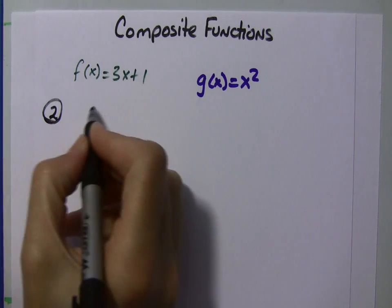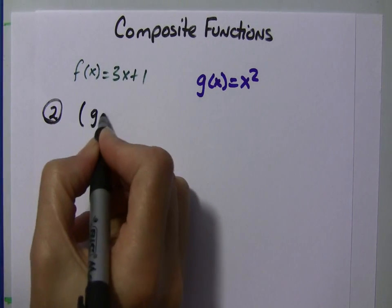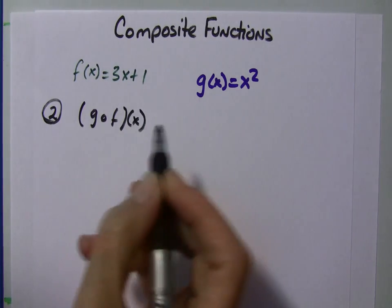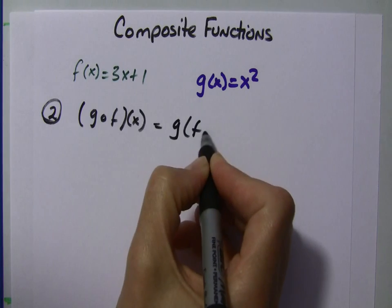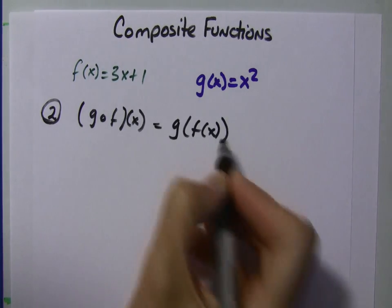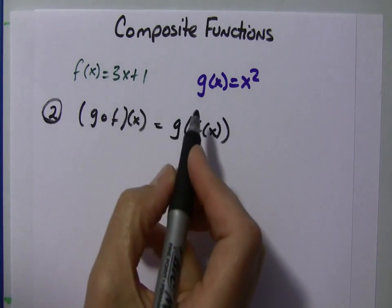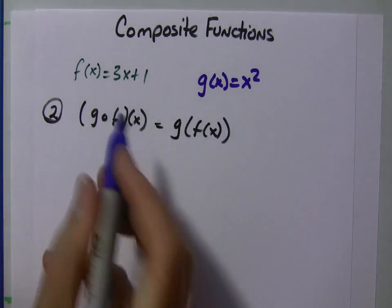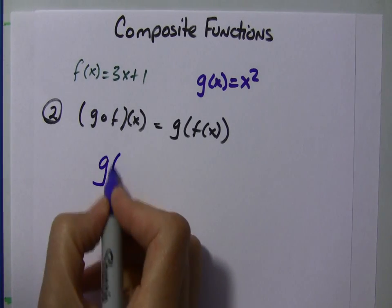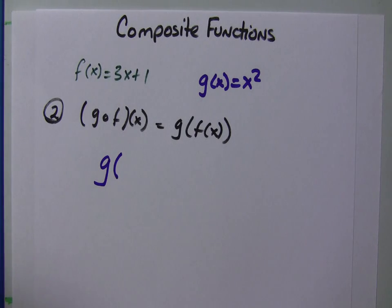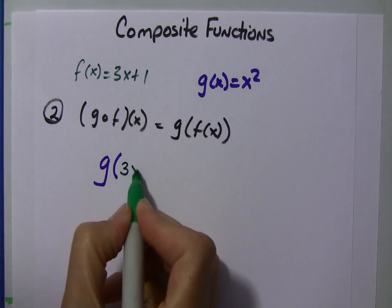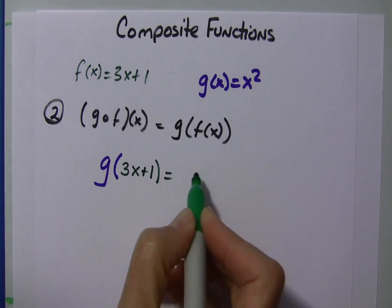And this time, let's get the g of f of x. So, order matters here. This is the g of the f of x. So, g of, well, f of x is 3x plus 1. So, I'm going to put 3x plus 1 in.